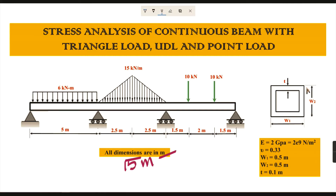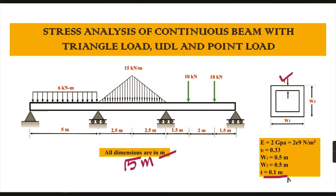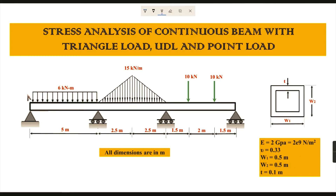All dimensions are given in meters. The cross-section for this beam is a hollow rectangular cross-section. The wall thickness is given as 0.1 meter. W1 stands for outer width and W2 stands for outer height — both values are the same: 0.5 meter and 0.5 meter. Now we are going to divide the entire beam into points with respect to the loads and distances.